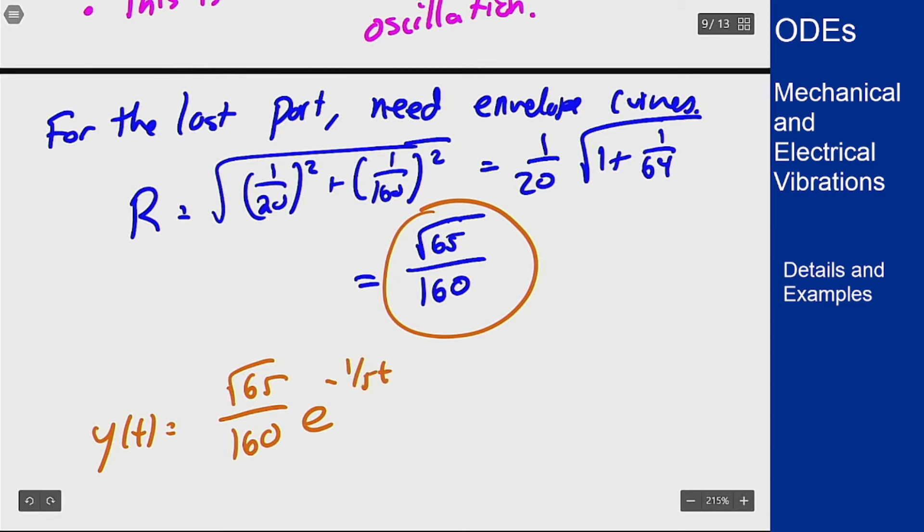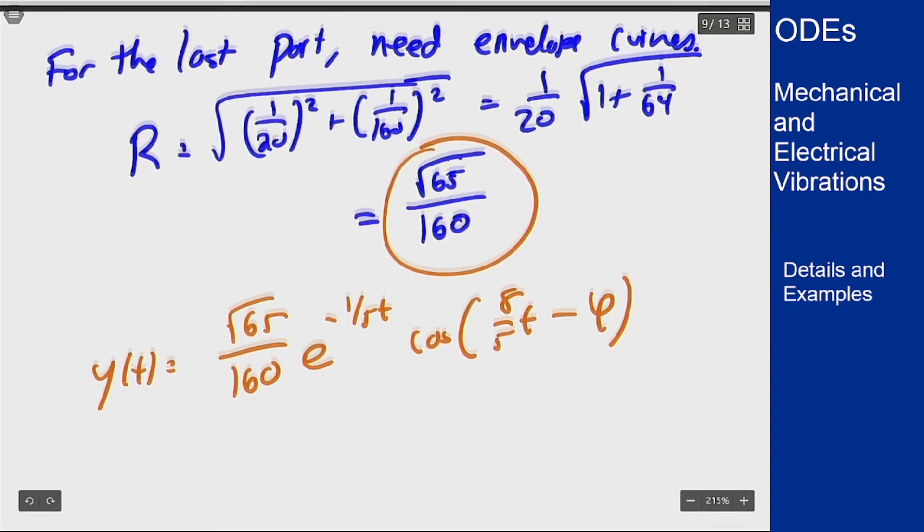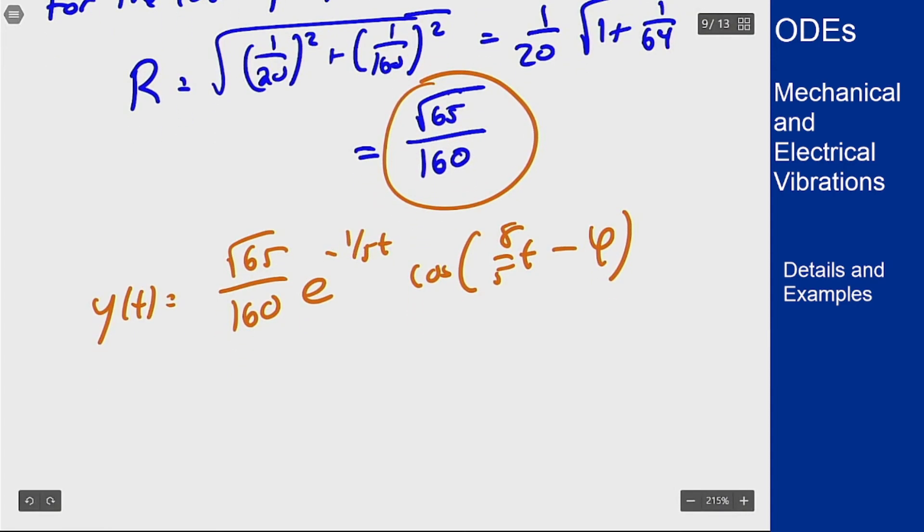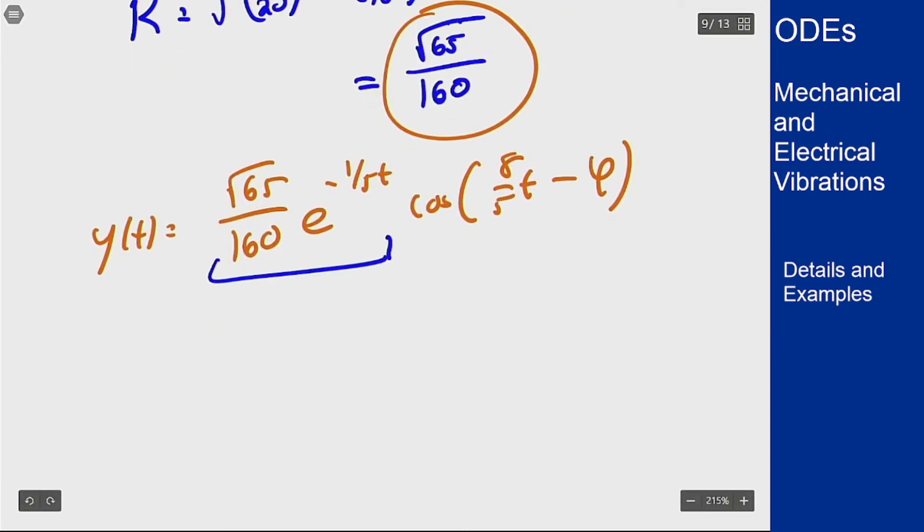This means I can rewrite my function as y of t is root 65 over 160 e to the minus 1 fifth t cosine of 8 fifths t minus phi for some phi. Now I don't know what phi is and I could solve for it but I don't need to answer this part of the problem. I want to know when I know for sure this is within 0.001 of the equilibrium solution which means I want to know when is this envelope curve, which is just this part, less than 0.001.